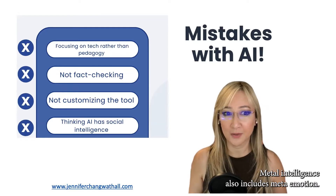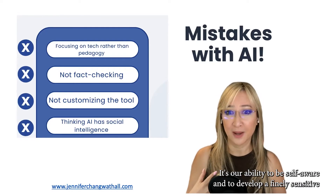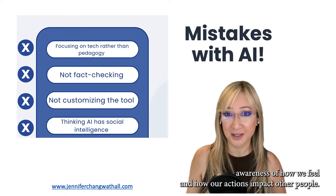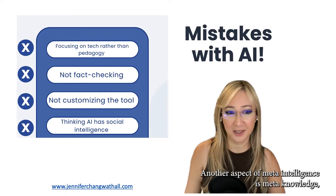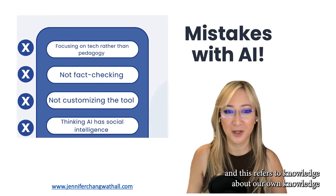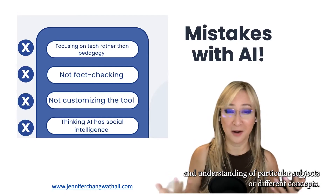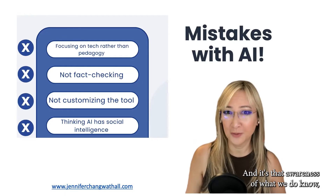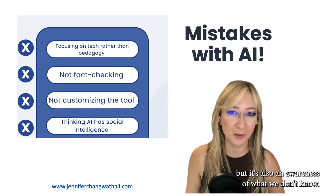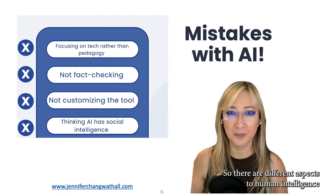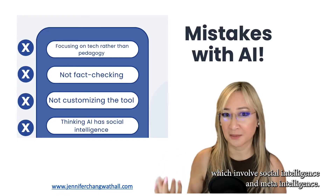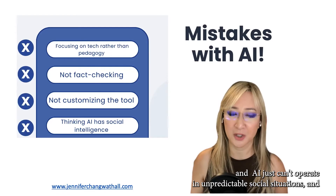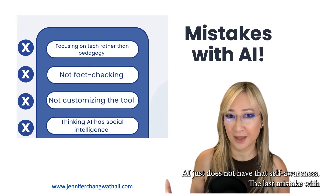Meta intelligence also includes meta emotion — our ability to be self-aware and to develop a finely sensitive awareness of how we feel and how our actions impact other people. Another aspect is meta knowledge, which refers to knowledge about our own understanding of particular subjects — awareness of what we do know, but also what we don't know. AI simply cannot operate in unpredictable social situations and does not have that self-awareness.